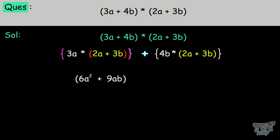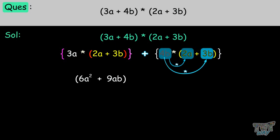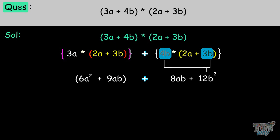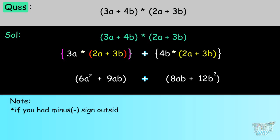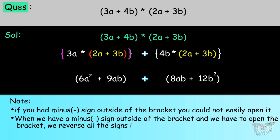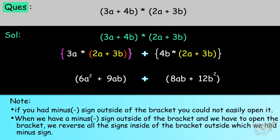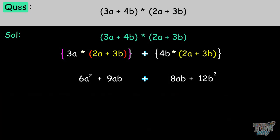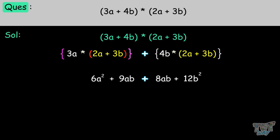This result is enclosed in a rounded bracket. Now let's solve 4B times (2A plus 3B): we multiply 4B with 2A to get 8AB, then 4B with 3B to get 12B squared. We have a positive sign outside of the bracket, so we can easily open up the brackets. Note: if there were a minus sign outside, we would have to reverse all the signs inside the bracket. Here we get 6A squared plus 9AB plus 8AB plus 12B squared.